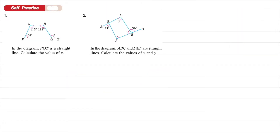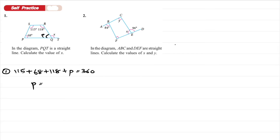Let's look at an example. In the diagram, PQT is a straight line. Calculate the value of x. PQRS is a quadrilateral with four sides, so the sum of interior angles is 360. To find angle P: 115 + 68 + 118 + P = 360, giving P = 59 degrees. Then to get x, since PQT is a straight line: x = 180 − 59 = 121 degrees.